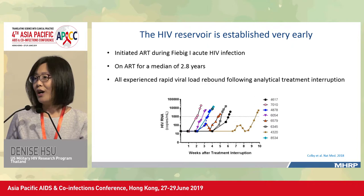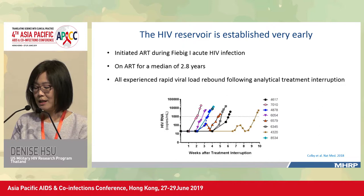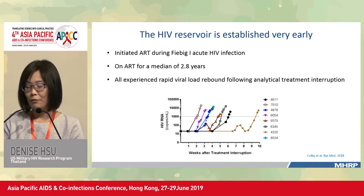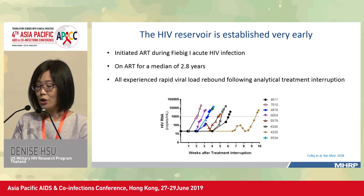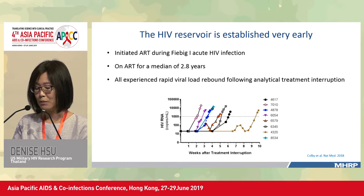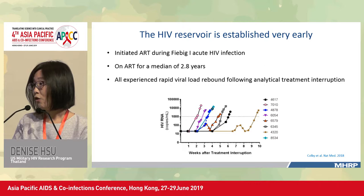The HIV reservoir is established very early. These are data from a study involving eight participants who initiated antiretroviral therapy during Fiebig-1 acute HIV infection — meaning nucleic acid test positive but P24 and antibody negative — with infection estimated to have occurred less than a week prior. These individuals started ART within a week of HIV infection and had been on ART for 2.8 years. Prior to treatment interruption, the single-copy assay was less than 0.45 copies per milliliter.